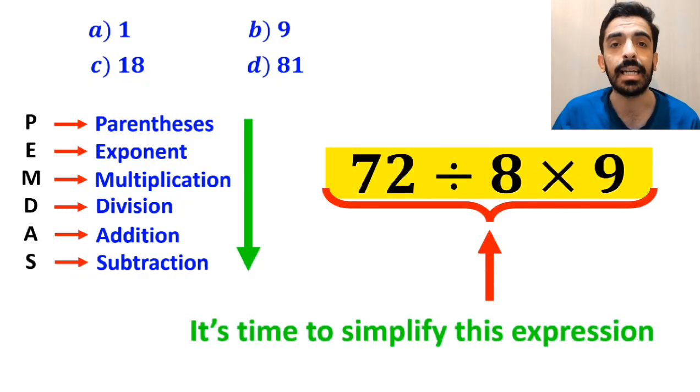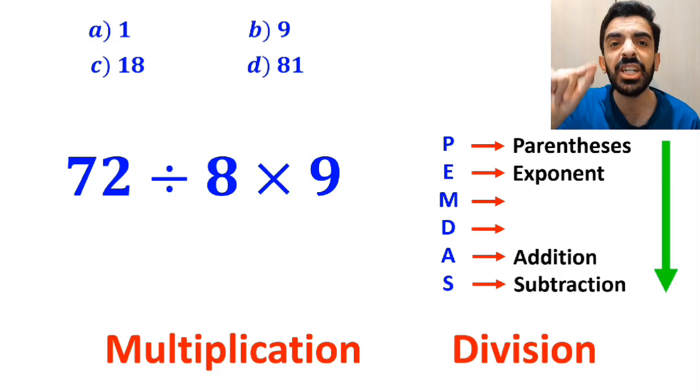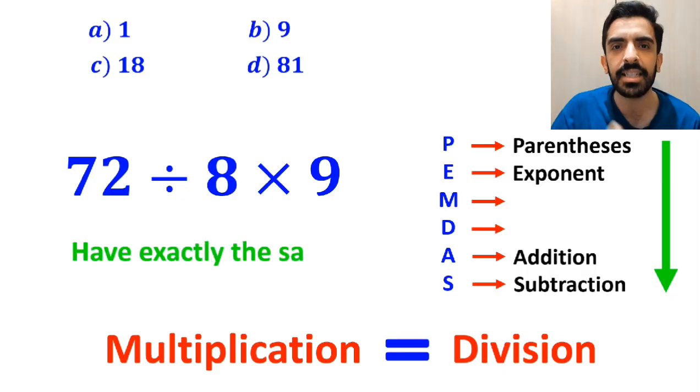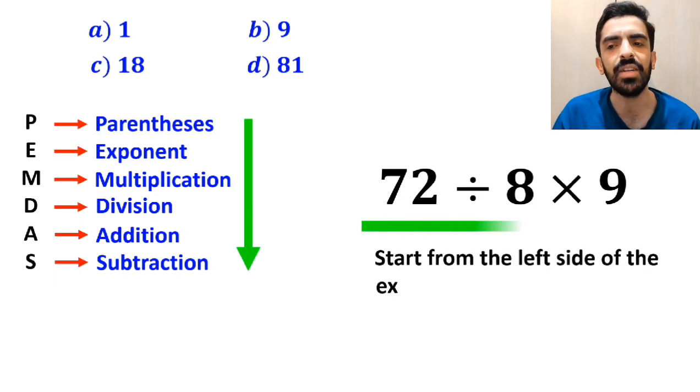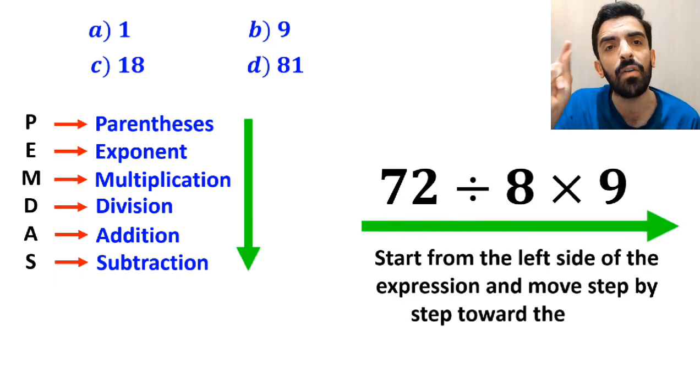It's very important to note that in the PEMDAS role, multiplication and division have exactly the same level of priority. In this case, all we need to do is to solve from the left side of the expression and move step by step toward the right.